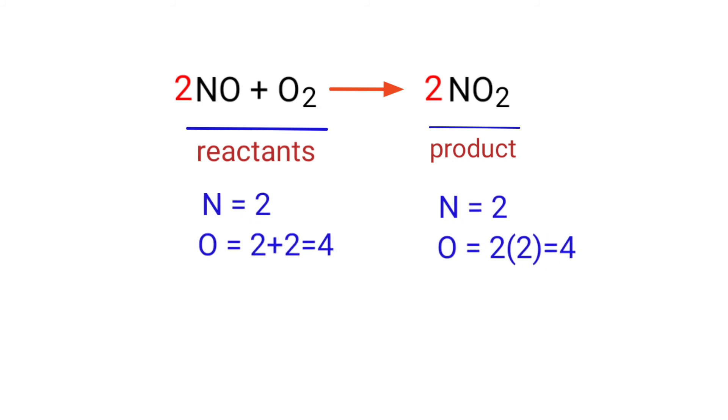The equation is now balanced. There are 2 nitrogen atoms and 4 oxygen atoms on both sides.